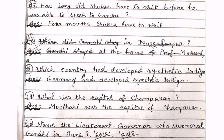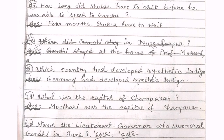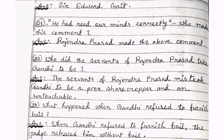What was the capital of Champaran? Motihari was the capital of Champaran — very important. Name the lieutenant governor who summoned Gandhi. This question came in 2012 and 2015. The answer is Sir Edward Gait — very important. Who made the comment 'he had read our minds correctly'? Rajendra Prasad made that comment. Who did the servants of Rajendra Prasad mistake Gandhi to be? The servants mistook Gandhi to be a poor sharecropper and an untouchable.